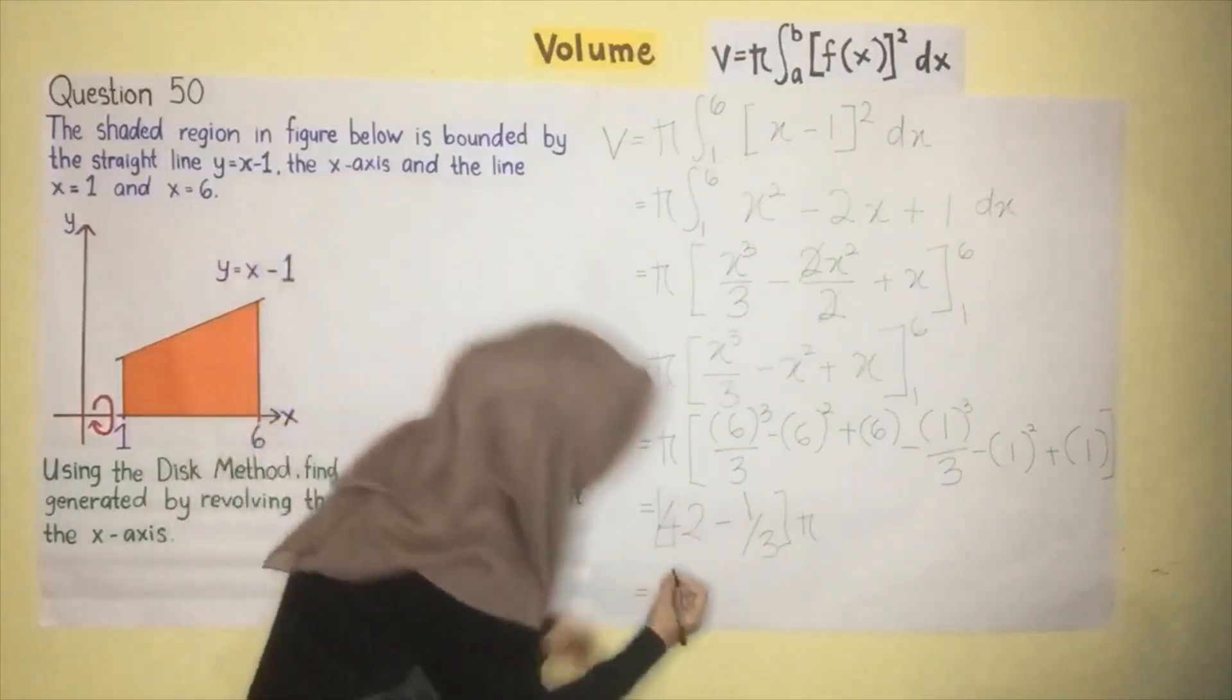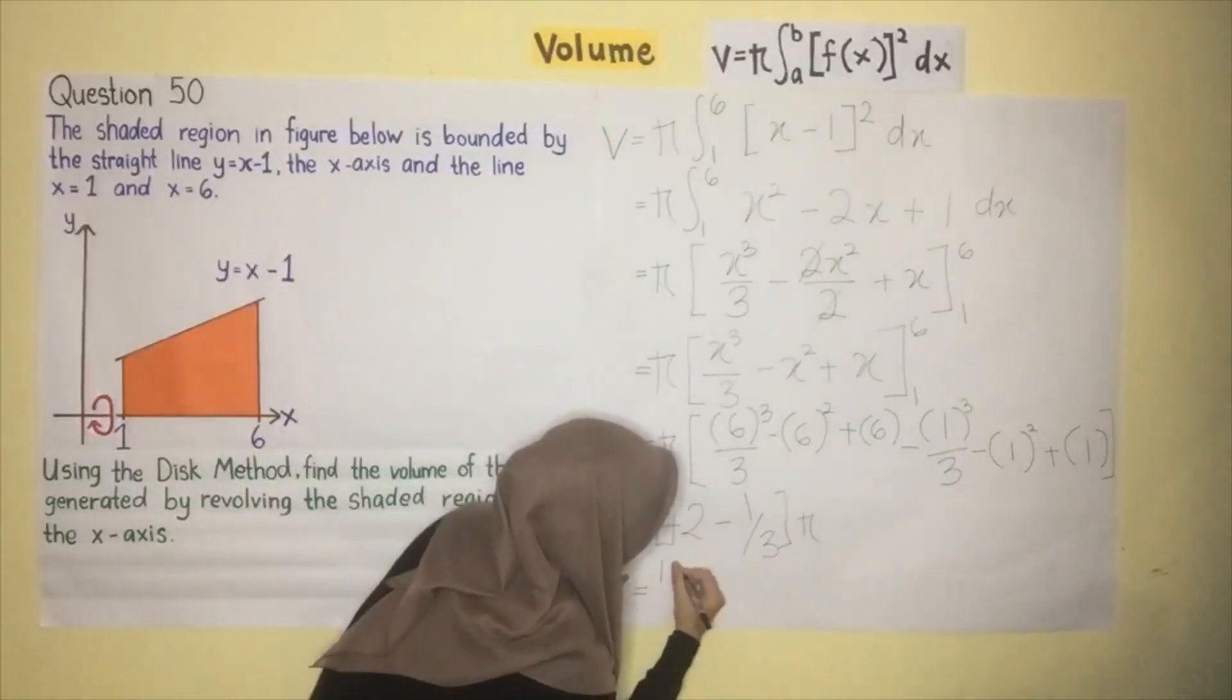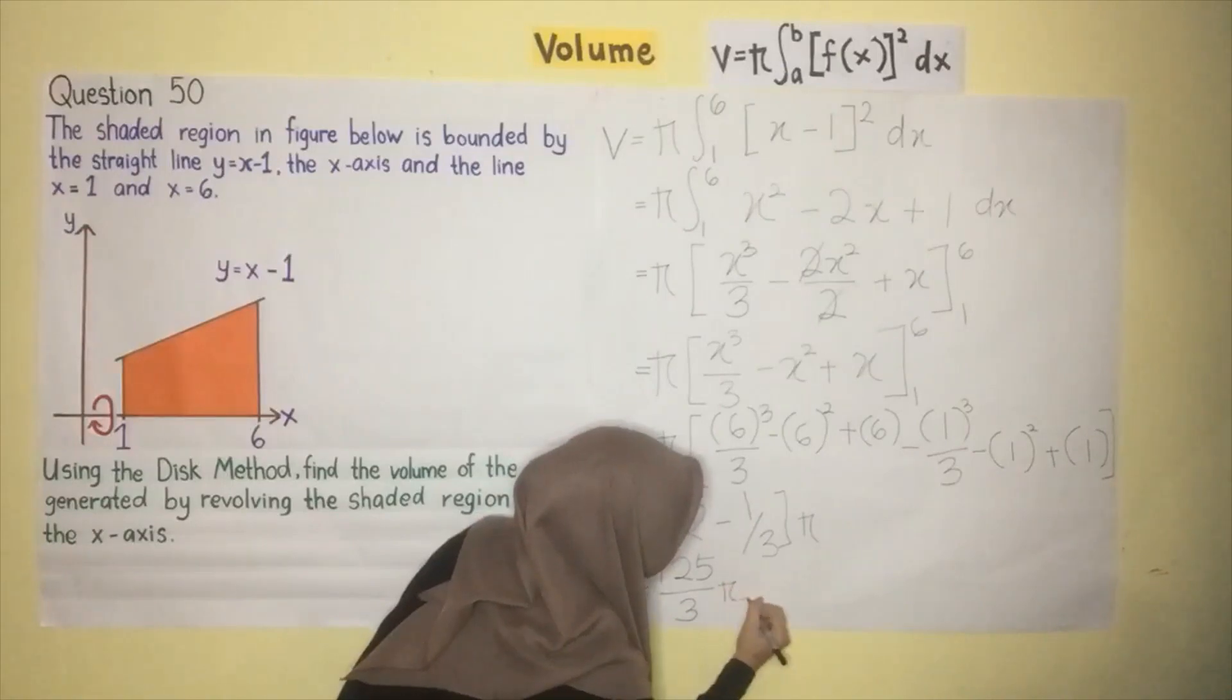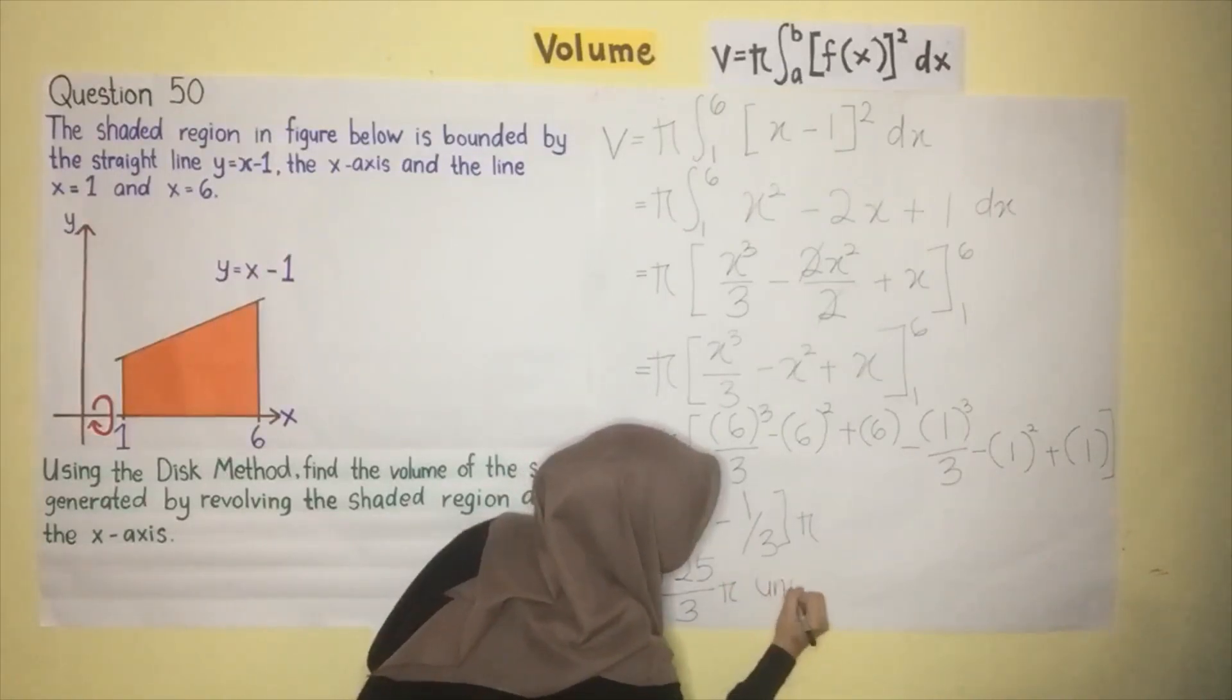Then the answer is 125 over 3 pi unit cubed. Oh, now I get it. You are right, it's not as hard as I thought. I think we should try to do more questions about volume so we can understand this topic better. Yes, that's right. Yeah, I agree with that too.